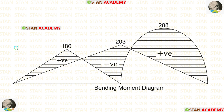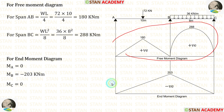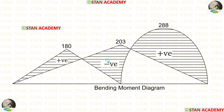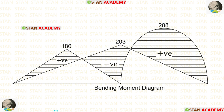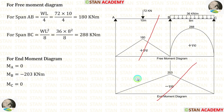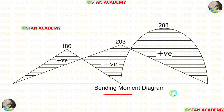Now let us draw the bending moment diagram by combining the free moment diagram and the end moment diagram. Wherever they act alone without overlapping, we mark them accordingly. Where only the free moment diagram acts, we mark positive; where only the end moment diagram acts, we mark negative. We mark the values as well. Wherever both diagrams act together, we leave the space without marking. If you are very experienced, there is no need to draw the free and end moment diagrams separately — you can directly draw the bending moment diagram. Thank you for watching this video. See you in the next video. Bye bye.